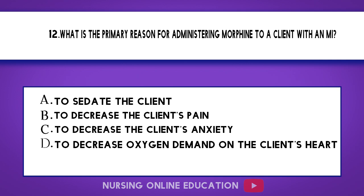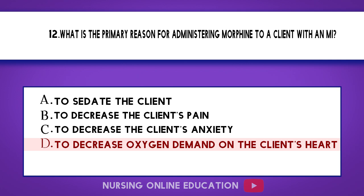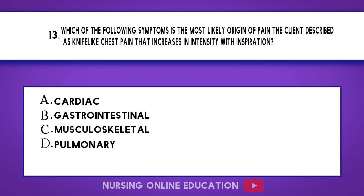Question 12. What is the primary reason for administering morphine to a client with an MI? A. To sedate the client. B. To decrease the client's pain. C. To decrease the client's anxiety. D. To decrease oxygen demand on the client's heart. The answer is option D: To decrease oxygen demand on the client's heart.